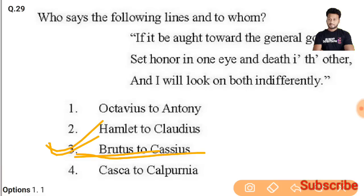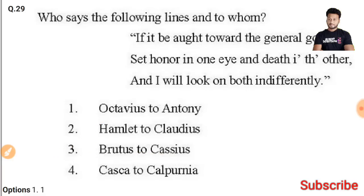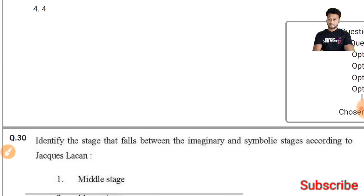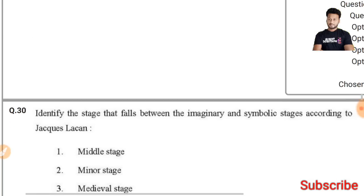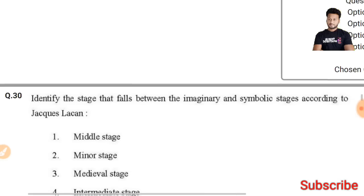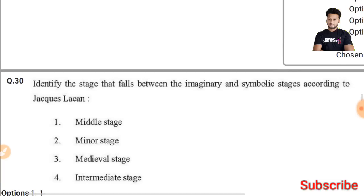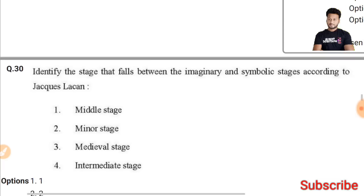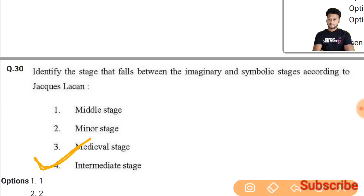Question 30: Identify the stage that falls between the imaginary and symbolic stage according to Jacques Lacan. This will be the intermediate stage — the fourth option will be the right answer.